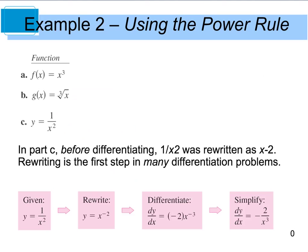So for example 2, part A — f of x equals x cubed — we want to find the derivative. So f prime of x is going to be: we pull this 3 down up front, so we get 3x to the 3 minus 1, which gives us 3x squared. So this is your derivative.